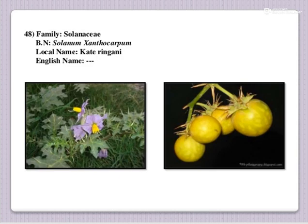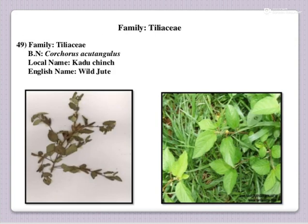The next one: local name is Kate Ringini. Botanical name is Solanum xanthocarpum, family Solanaceae. Then next one is Kaduchinsa, or wild jute. Botanical name is Corchorus acutangulus, family Tiliaceae.